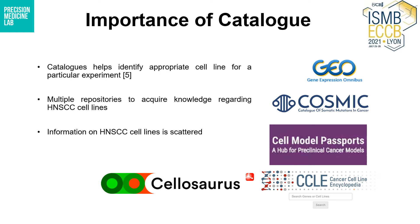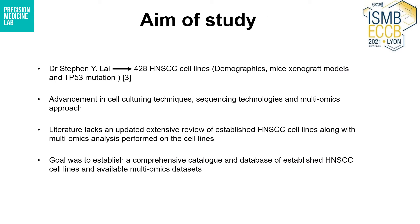Although these cell lines have been established and the data is present in various databases, such as Cellosaurus, Cancer Cell Line Encyclopedia, Cell Model Passport, Cosmic, Gene Expression Omnibus, and many other databases, this data is scattered and needs to be cataloged. We got our inspiration for the CMOS database from a study conducted by Dr. Stephen Lies' lab in 2006, where they established a catalog of 428 HNSCC cell lines that included data on demographics, mice xenograft models, and TP53 mutations.